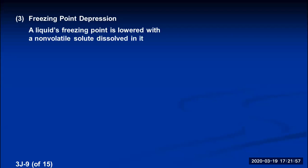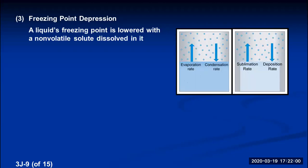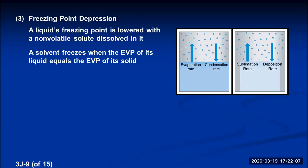To understand why this is, let's go back to the definition of freezing point. If you have a liquid and a solid — say water and ice — at zero degrees Celsius, that's the freezing point. That's the temperature where the equilibrium vapor pressure of liquid water exactly equals the equilibrium vapor pressure of ice. The freezing point is whatever temperature allows the EVP of the liquid to equal the EVP of the solid, and for water that happens at zero degrees Celsius. Now let's see what happens when we dissolve a solute into the water.